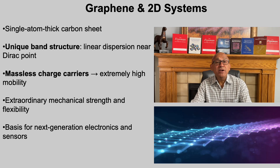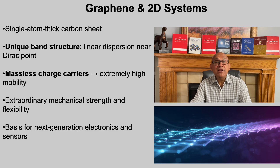Graphene is one of the most remarkable 2D nanomaterials. It is just one atom thick, yet it is stronger than steel and conducts electricity better than copper. What makes graphene special is its unusual band structure. Near the so-called Dirac point, its energy dispersion is linear, which means its electrons behave like massless particles. This gives graphene extremely high electron mobility and conductivity. At the same time, graphene's thin, flexible, and transparent nature makes it useful in mechanical, optical, and electronic applications. This combination of strength, conductivity, and flexibility makes graphene a perfect example of how quantum effects in 2D systems can create entirely new classes of materials.